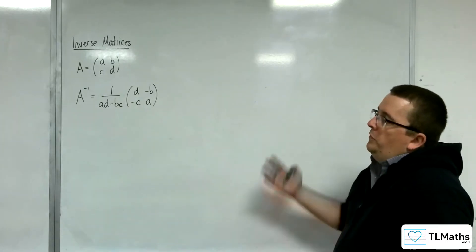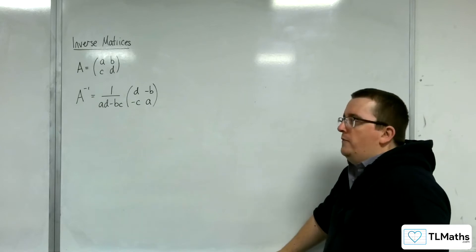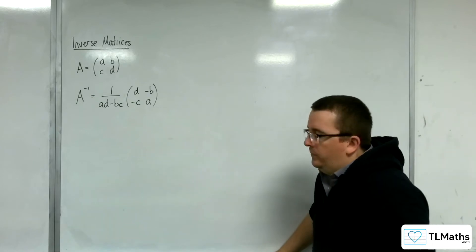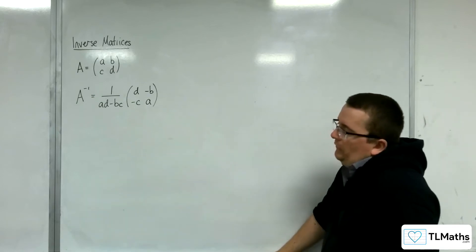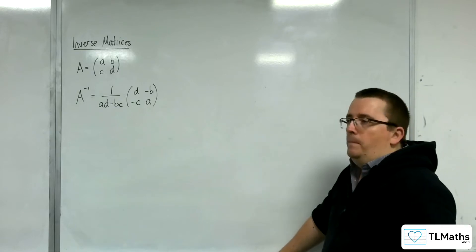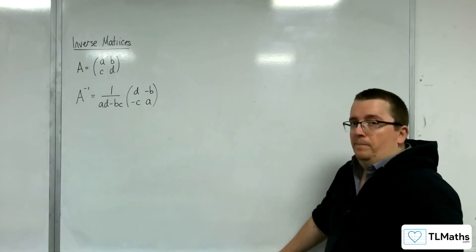Now, what you should really be thinking about is, well, what if the determinant is 0? If the determinant is 0, then we are dividing by 0, and that's going to cause a problem.